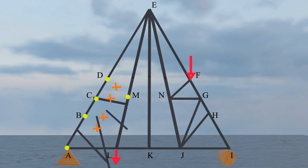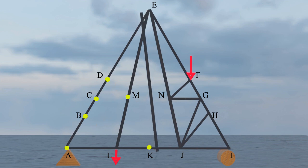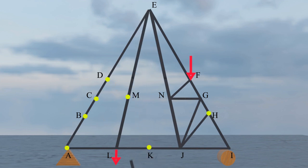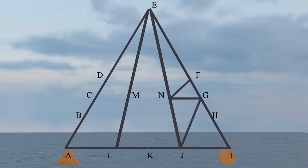Now consider joint K. Applying rule 2, member KE will have zero force. At joint H, the same rule applies and member HJ will have zero force. After removing all these zero force members, the structure becomes greatly simplified, and you can easily analyze it using the method of joint.